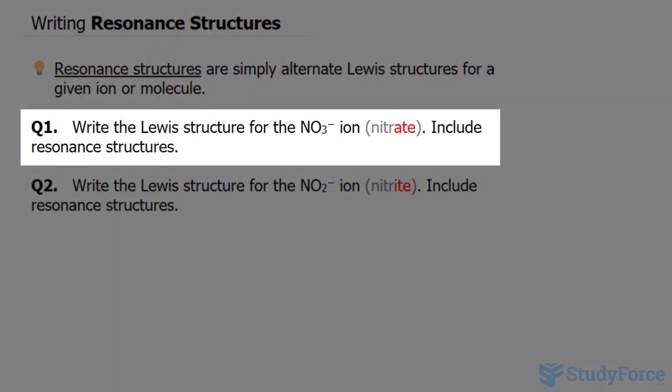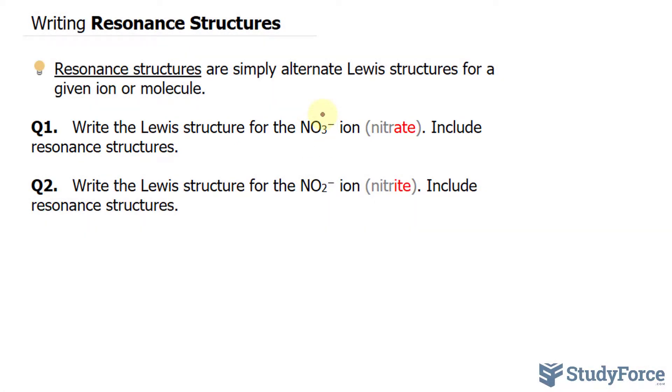In question number one, we're asked to write the Lewis structure for nitrate, NO3 minus, and we're expected to include the resonance structures.